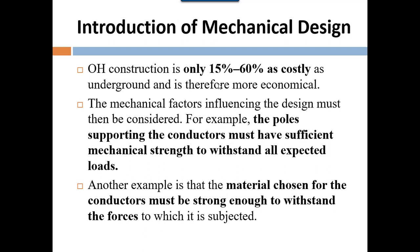There are two types of transmission line used in power systems: underground transmission line and overhead transmission line. In developing countries where there are not enough financial resources available, we prefer to implement overhead transmission line instead of underground, because the cost of overhead transmission line is almost 15 to 60 percent less than underground transmission.